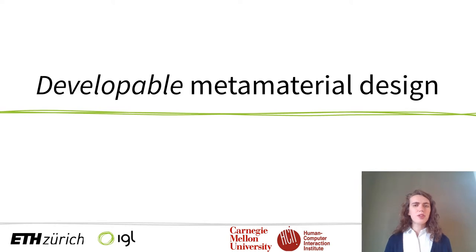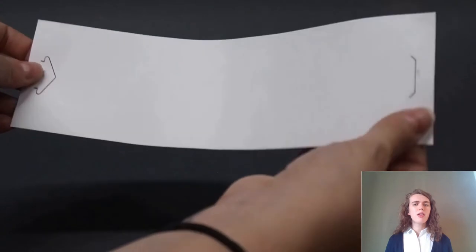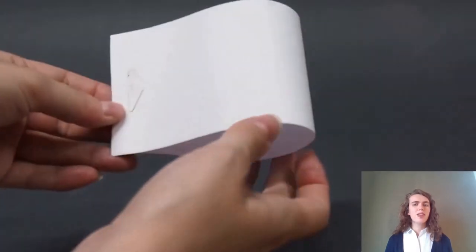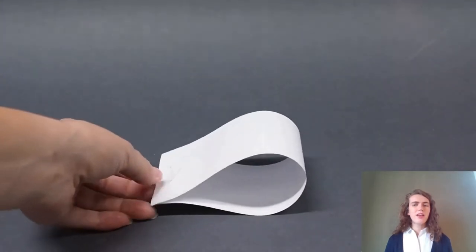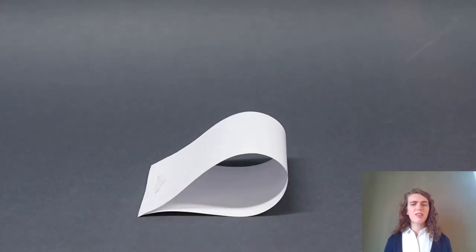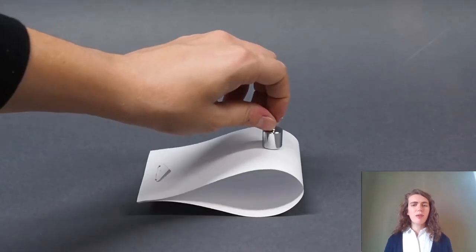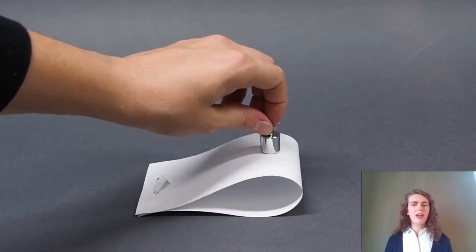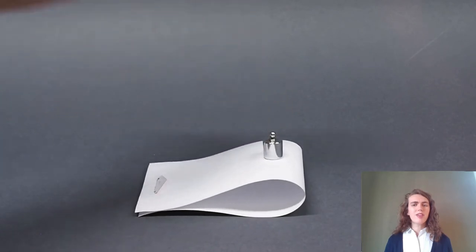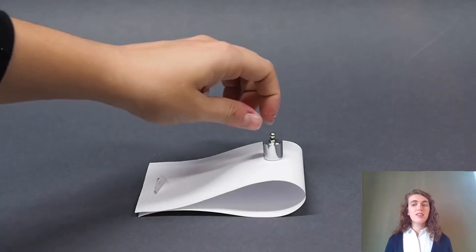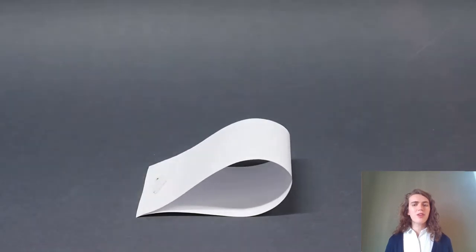With our paper we make three contributions. Our first contribution is a novel metamaterial design that is developable. This enables it to be laser cut from flat sheet material, leading to a much faster fabrication process. While most sheet materials such as paper are very compliant, we can fold it onto itself in a smooth ruffle which significantly increases its stability. This ruffle is the unit cell of our metamaterial.